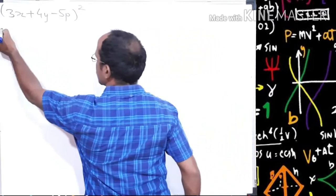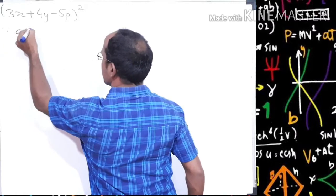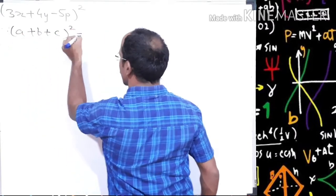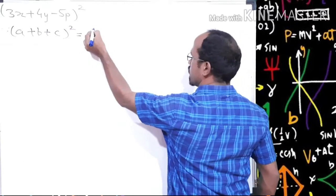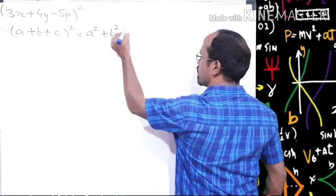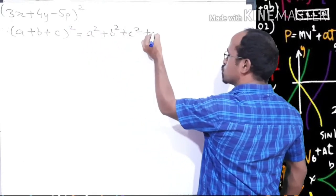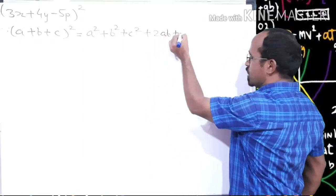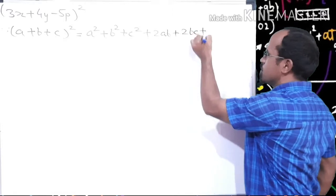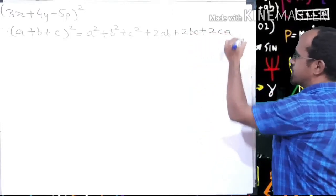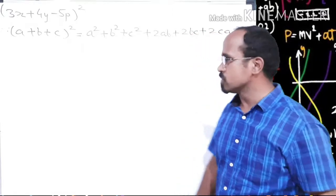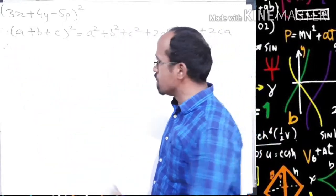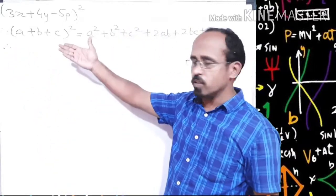First, let's write the formula. If (a + b + c)² is equal to the square of all three terms: a² + b² + c² + 2ab + 2bc + 2ca. We have now written the formula and we have to replace the values in the formula.